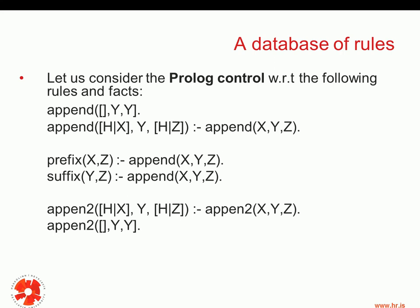Now let's take an example. Let us consider the Prolog algorithm with regard to the following rules and facts. We have the append relation, which is actually a built-in relation in Prolog, and we've discussed it in previous lectures. We also have a prefix and a suffix relation, where prefix(x, set) is true if append(x, y, set) is true, and suffix(y, set) is true if append(x, y, set) is true.